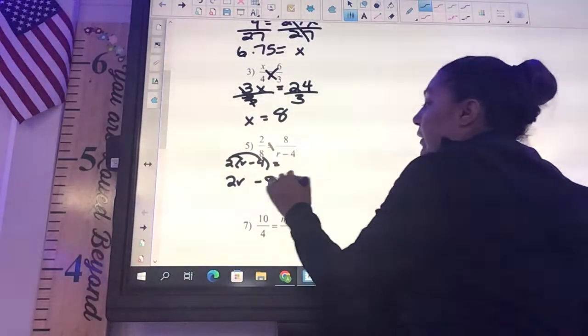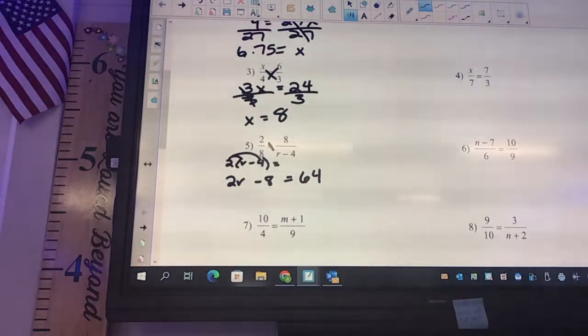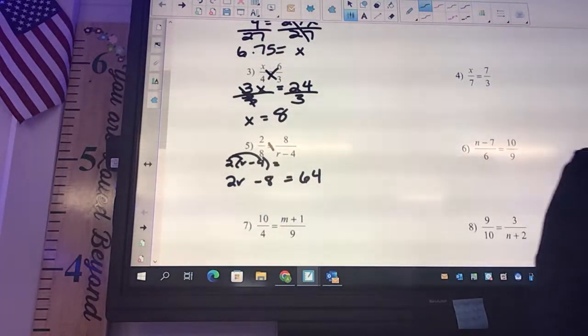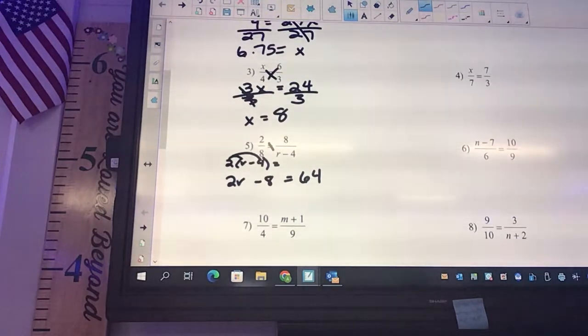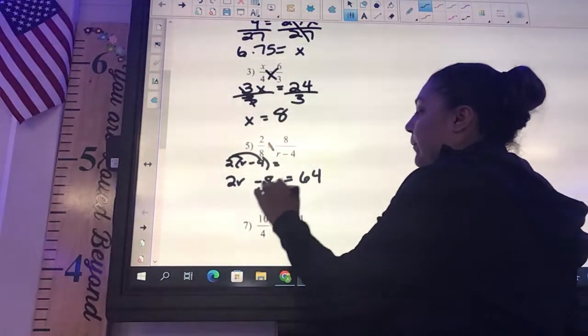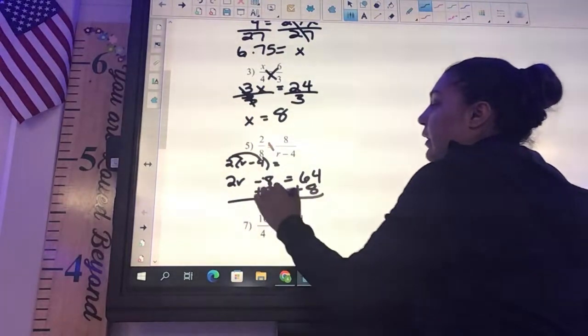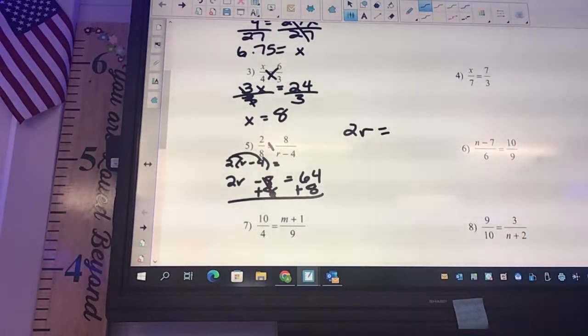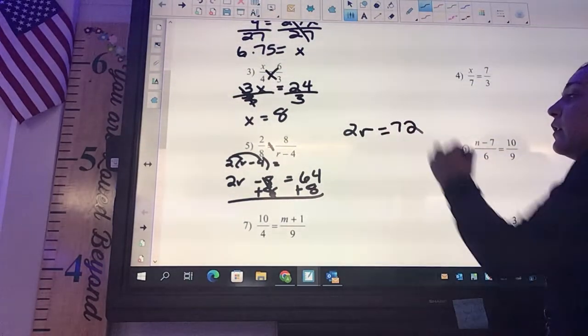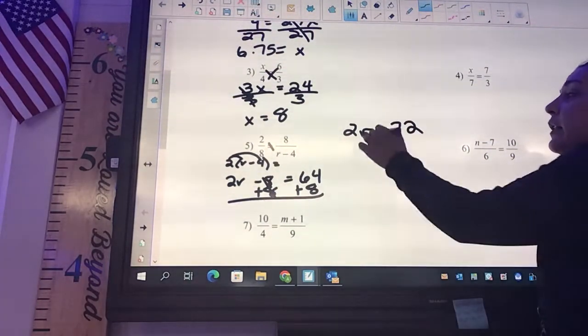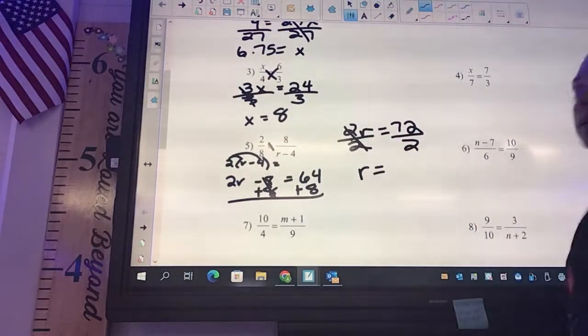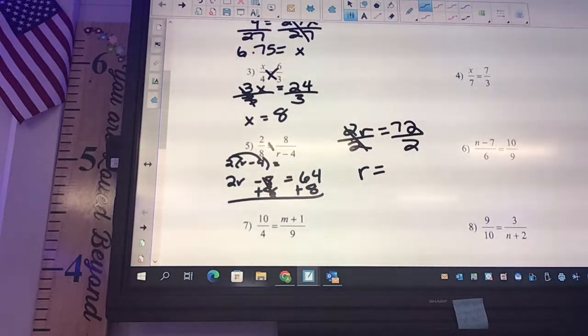And then 8 times 8 is going to be 64. But this step, you're going to kind of have to write out and work out. What do you move first? Add 8. So you're going to get 2r equals 72, and then divide by 2. And what are you going to get? 36. 36.